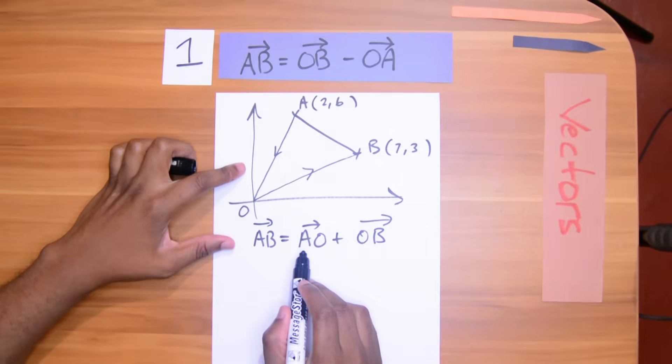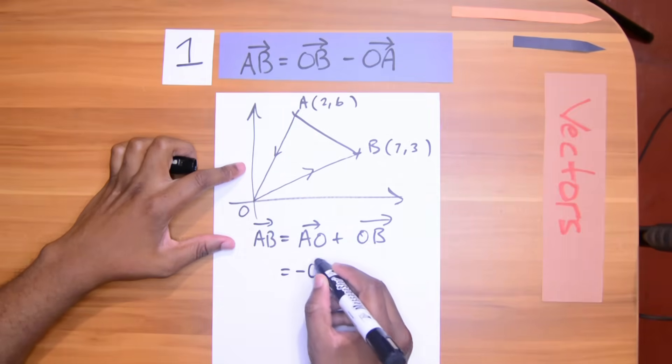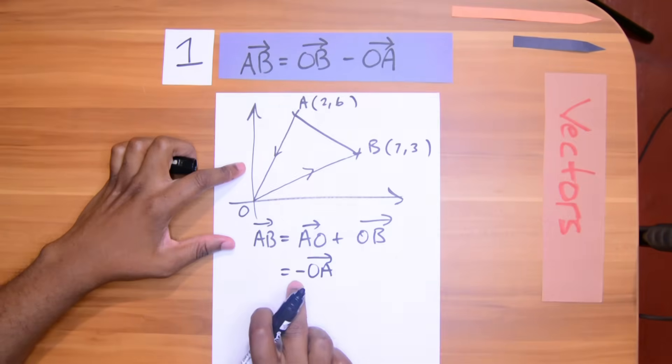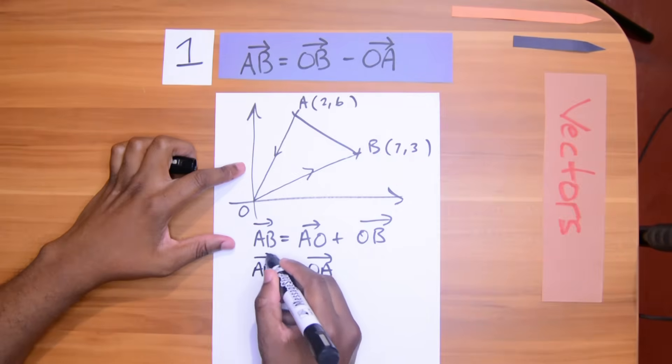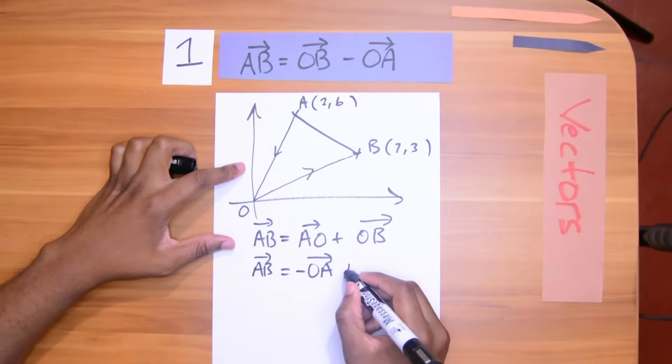Now, you should know that AO is really negative OA. If I turn it around, it's just the negative. It's the negative inverse.